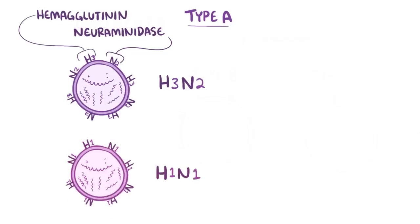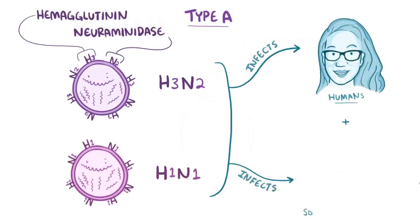H3N2 and H1N1 are the most common type A subtypes to infect humans, but they both also infect various animals.